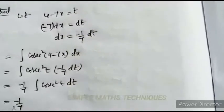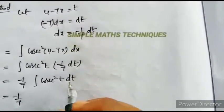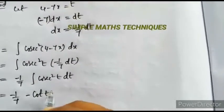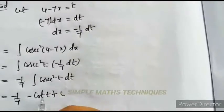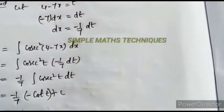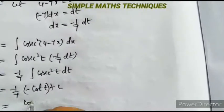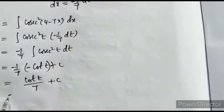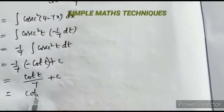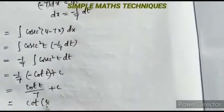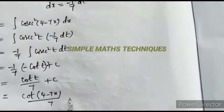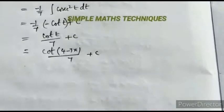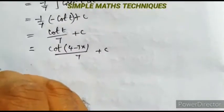Integration of csc²(t) dt equals -cot(t) plus c. So -1/7 · (-cot t) = cot(t)/7. Substituting t = 4-7x, we get cot(4-7x)/7 plus c. This is the solution of the given problem.